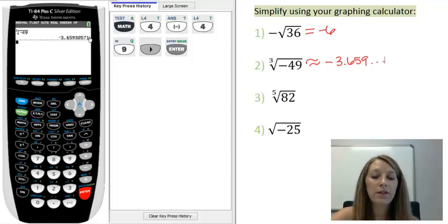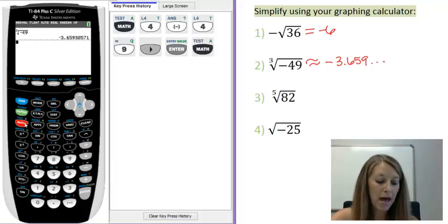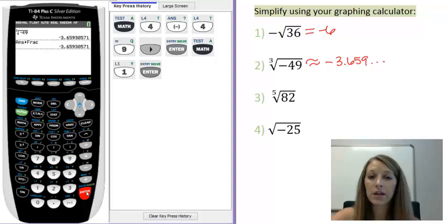An easy way to tell the difference between an irrational and a rational number on your calculator is if you try and convert it back to a fraction. So, I'm going to do that. Math, option 1 converts it to a fraction and hits enter. Notice that it doesn't convert it back because it is impossible to convert it to a fraction, meaning it is irrational and not rational.